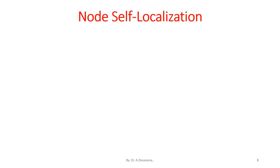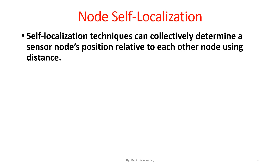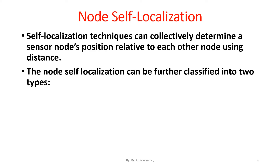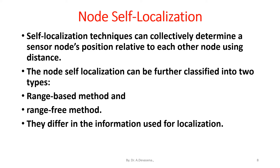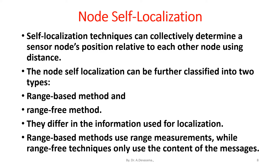Node or self-localization technique can collectively determine a sensor node's position relative to each other node using distance. It can be further classified into two types: range-based method and range-free method. They differ in the information used for localization. Range-based methods use range measurements while range-free techniques only use the content of the messages.